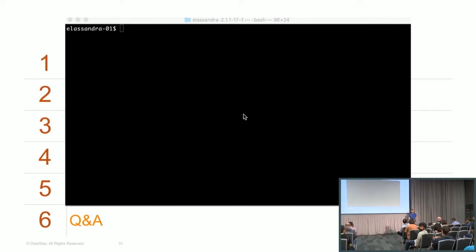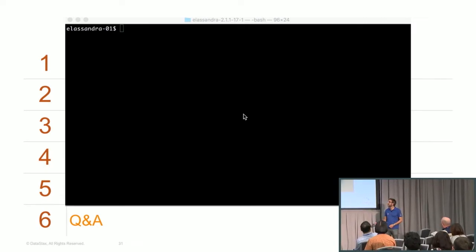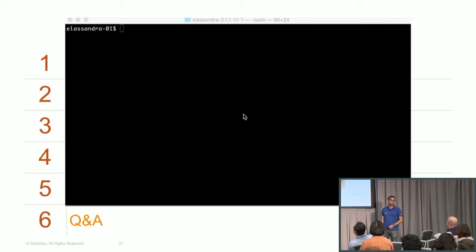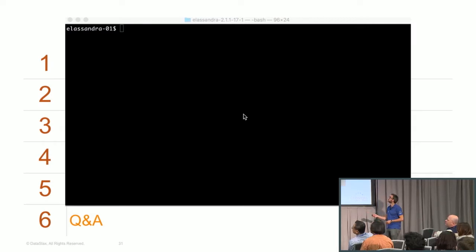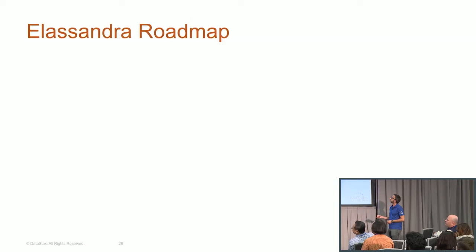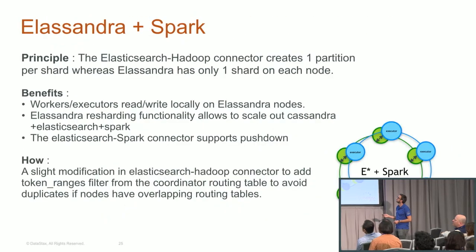First question: you showed using date window compaction strategy for time series data — is the time window compaction strategy configurable? Time window compaction strategy is the new hotness. We will move to the time window compaction strategy when we run with Cassandra 3.